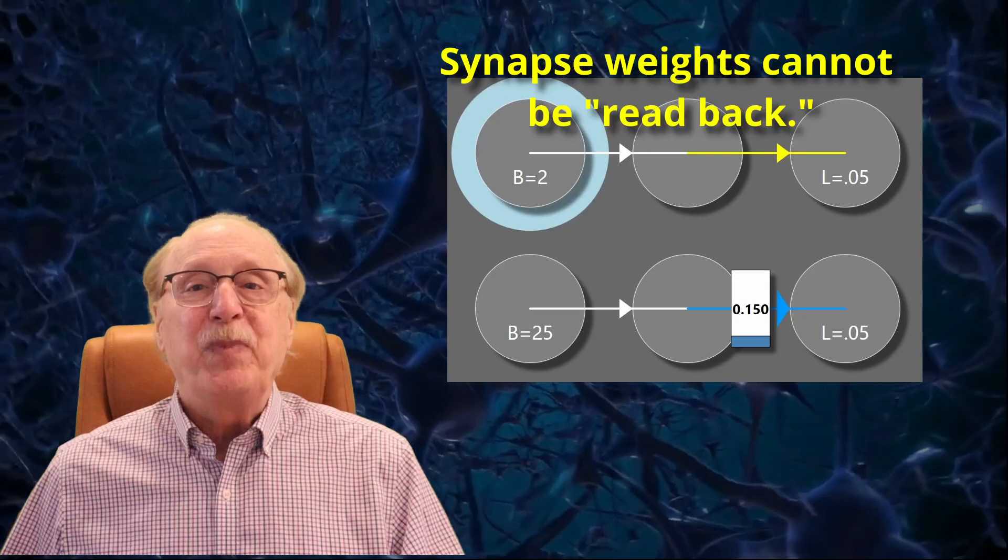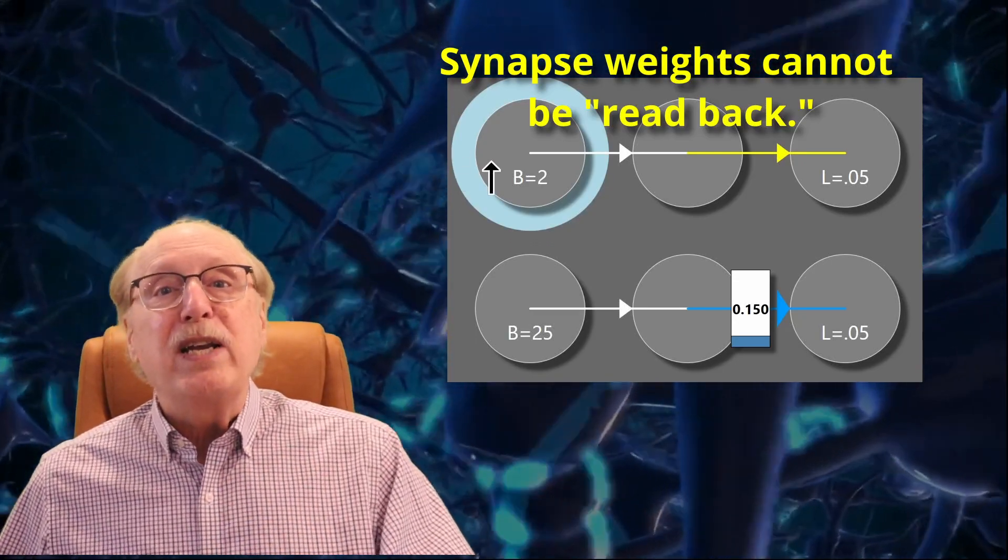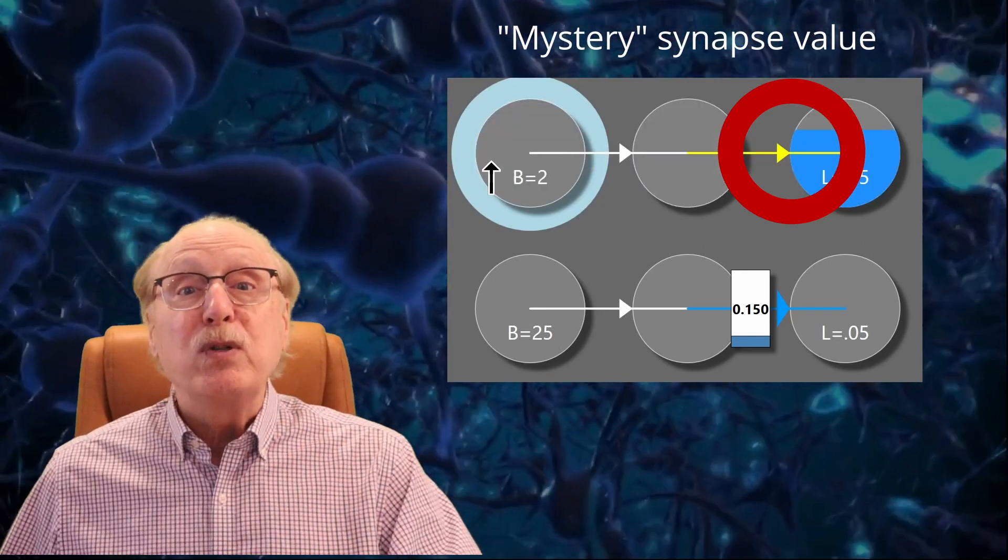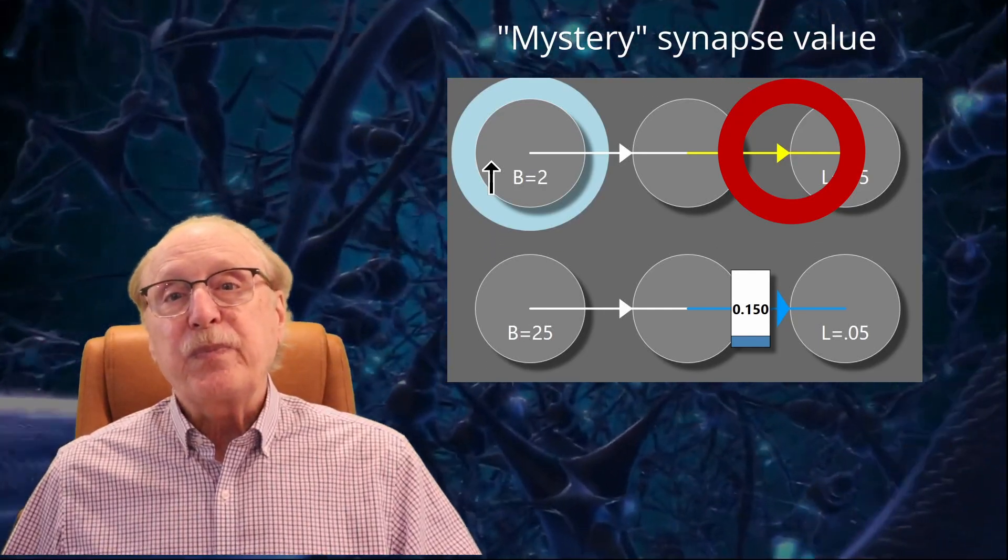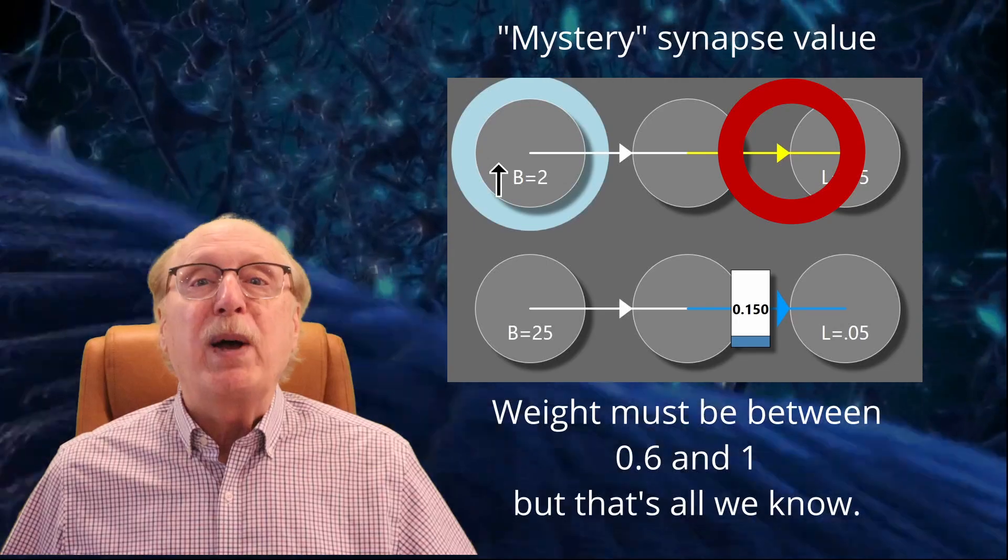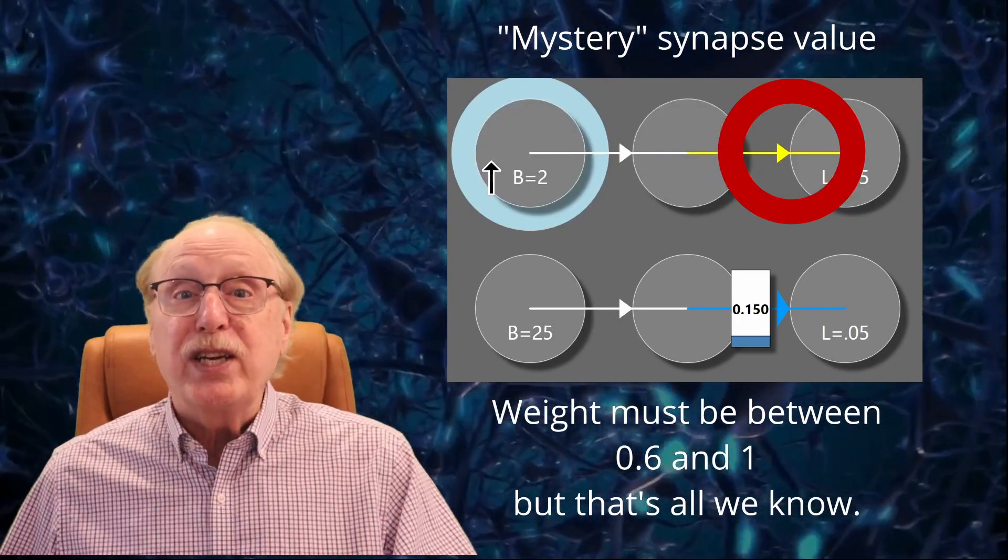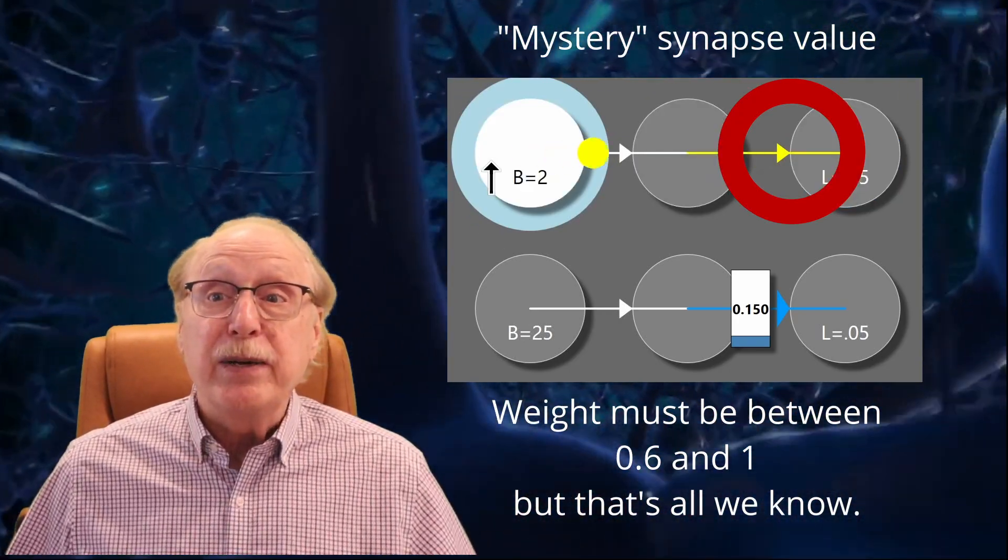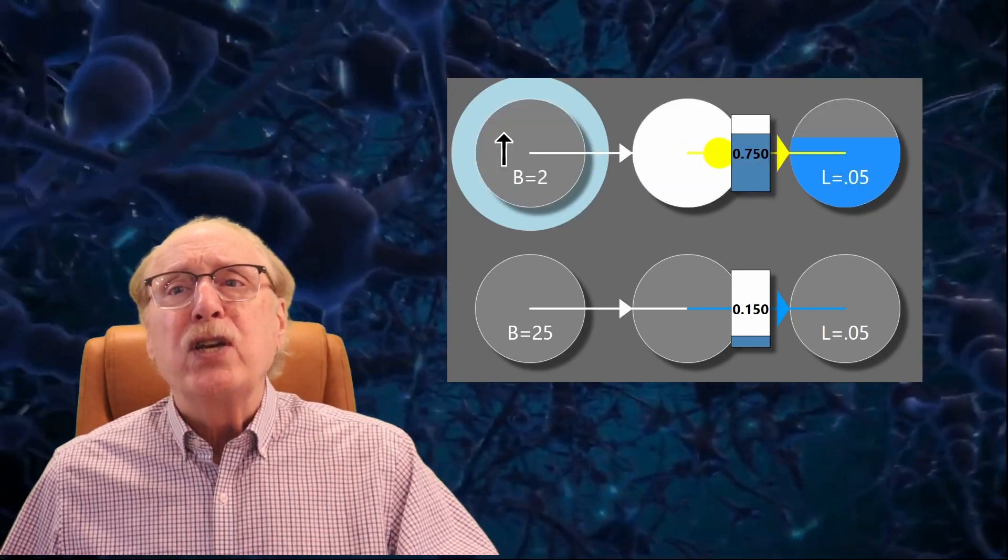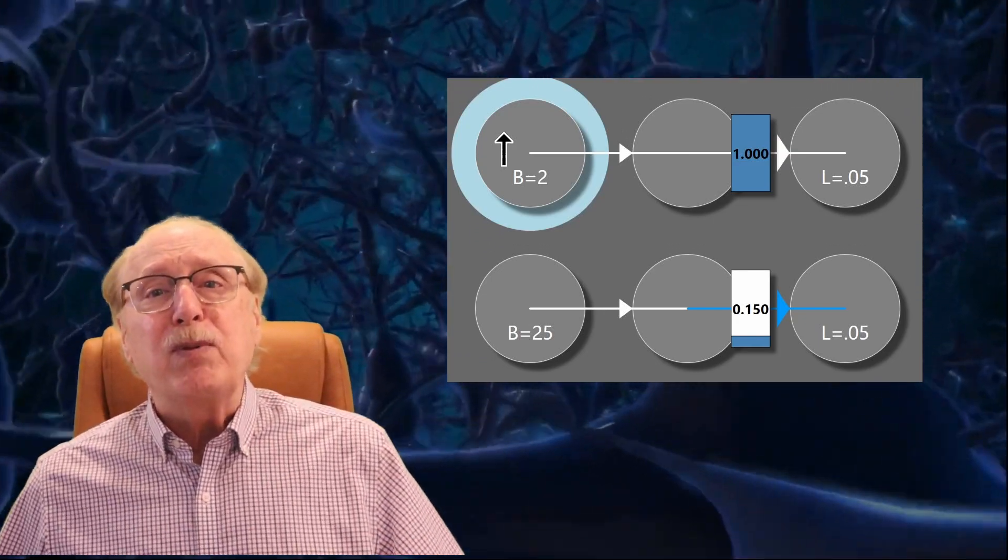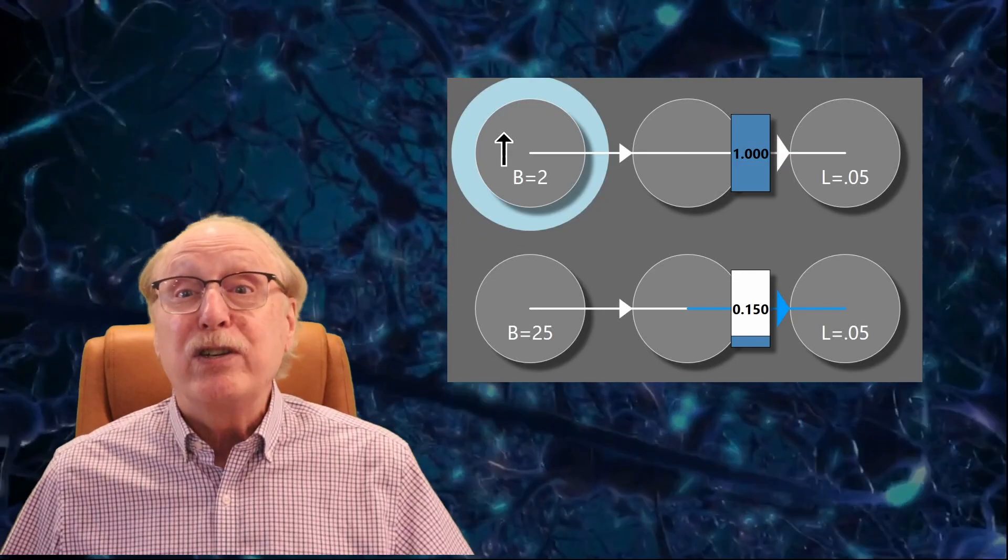Beyond being difficult to set with precision, synapse weights are essentially impossible for your brain to read back. Consider this. To learn the weight of an individual synapse, you fire the presynaptic neuron repeatedly until the postsynaptic neuron fires. So if it takes only two spikes to make the target neuron fire, the aggregate synapse weight must be between 0.6 and 1, depending on the leakage rate. But when that postsynaptic neuron fires, the synapse weight might change. Ouch, it's a bit like quantum particles where it's impossible to measure any value without disrupting the value you're trying to measure.